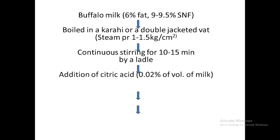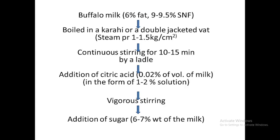In the case of kalakand — also called milk cake — after the point when the milk starts to boil, we add citric acid at 0.01 to 0.02 percent. Usually 0.02 percent of citric acid is added to the milk. For example, when we are taking one liter of milk, we will be adding 0.2 gram of citric acid. This citric acid is to be added in the form of a solution.